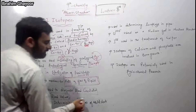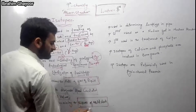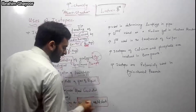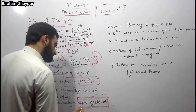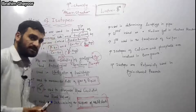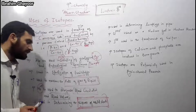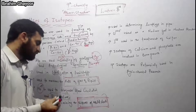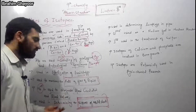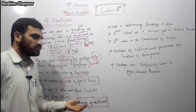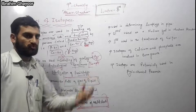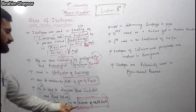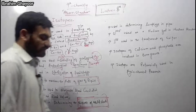Isotopes are also used to determine the thickness of metal sheets. A radiation source is placed on one side of the metal sheet and a detector on the other. The thickness is calculated based on the amount of radiation passing through, which helps in quality control of manufacturing.